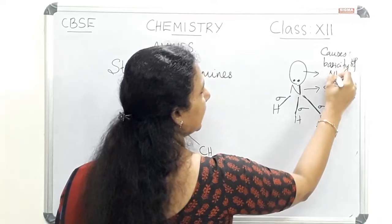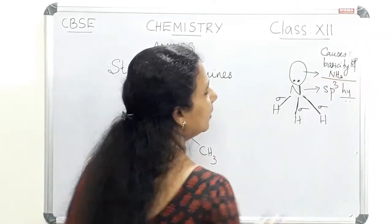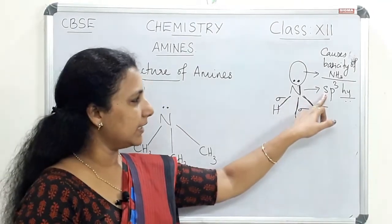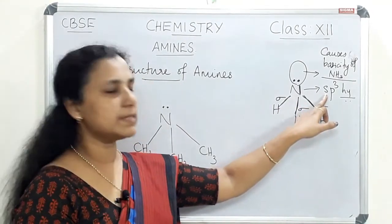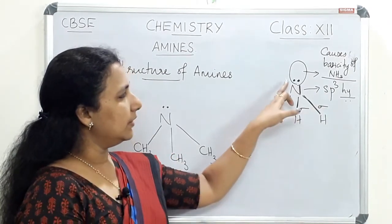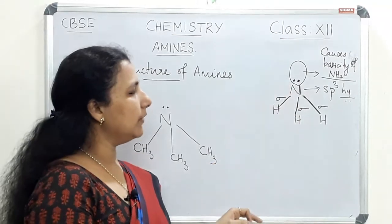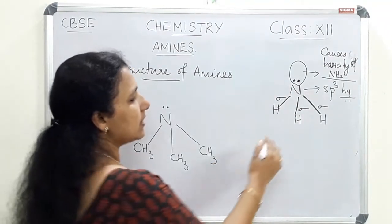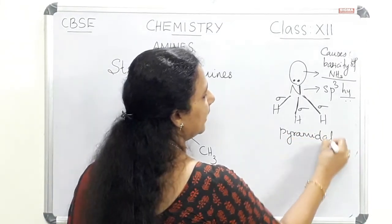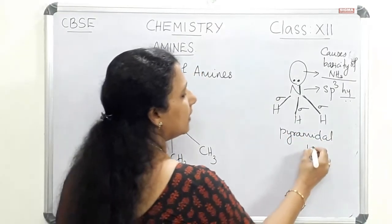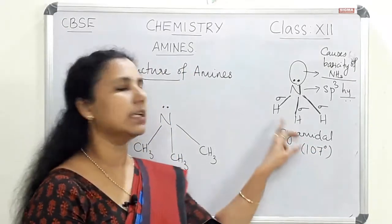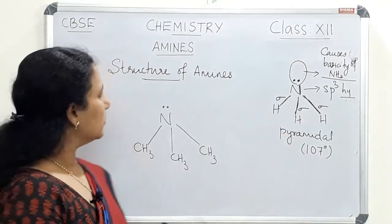In the case of ammonia, the nitrogen atom is sp3 hybridized. In sp3 hybridization we expect a tetrahedral structure, but due to the presence of a lone pair of electrons the structure is actually pyramidal in shape, not tetrahedral. The bond angle is 107 degrees in the case of NH3.